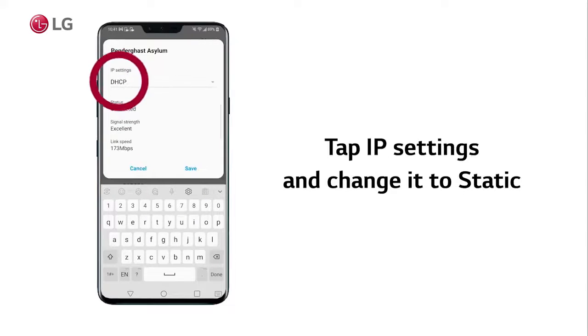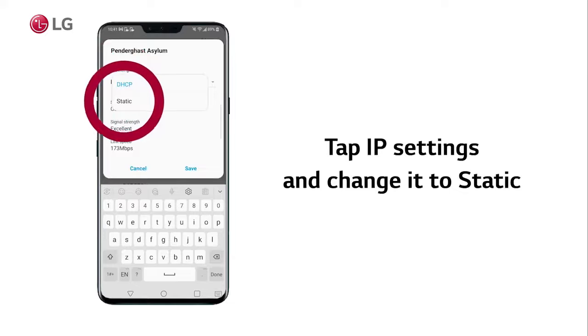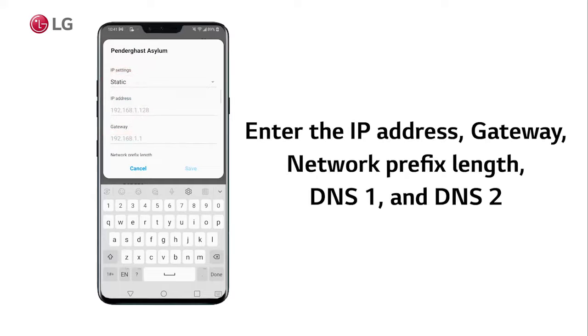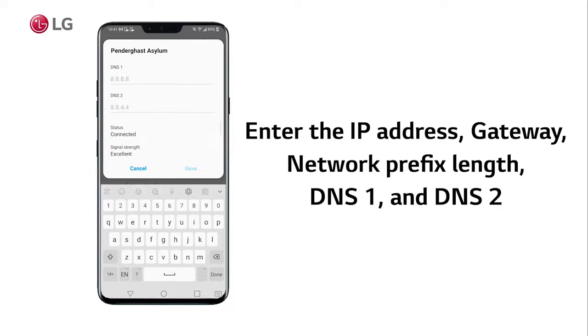Then check the box for Show Advanced Options. Tap IP Settings and change it to Static, then enter the IP address, gateway, network prefix length, DNS 1, and DNS 2.